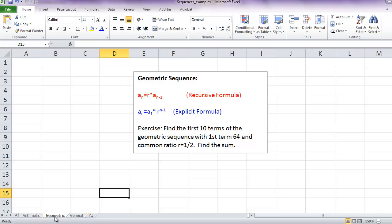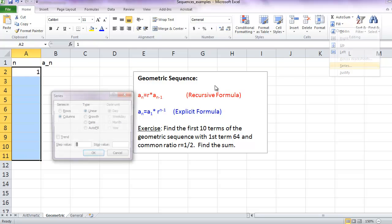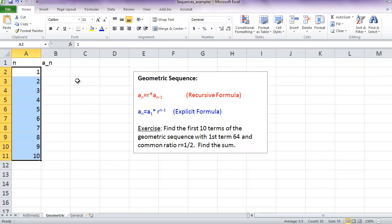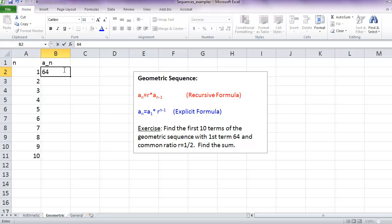Next, let's look at a geometric sequence. Again, I'll label my columns n and a sub n. Let's fill down the series. The first term is 64, and that's given in the problem.